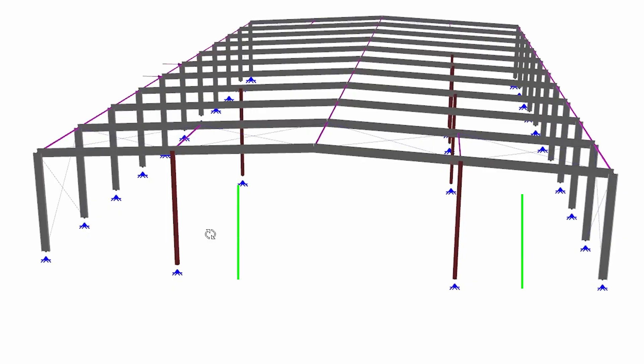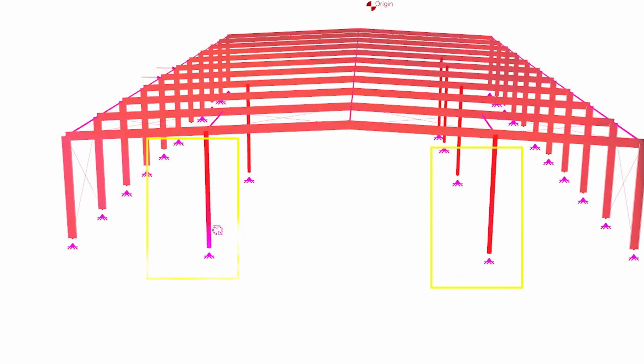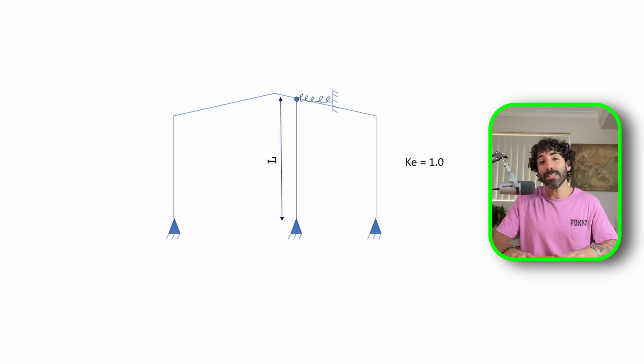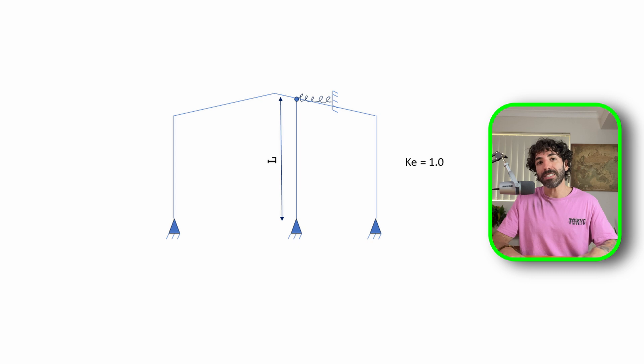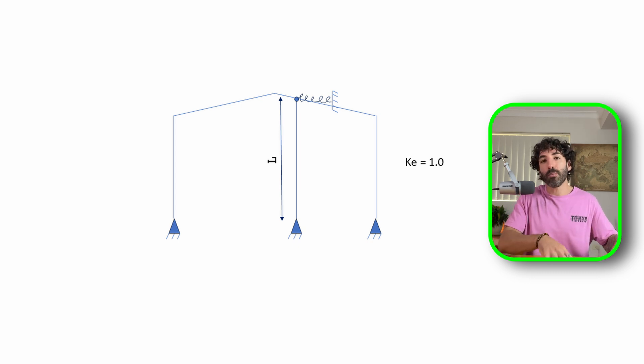For many cases, accurately finding the effective length can be difficult. For example, in a portal frame end bay with a central pinned-pinned column, to use KE = 1 you have to assume the portal frame itself has sufficient sway stiffness to effectively brace the top of the column. If it does, the portal frame would not be considered a sway frame and KE = 1 would be appropriate. So make sure you understand the overall system behavior before making any assumptions.